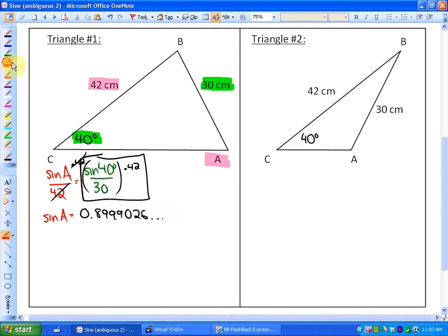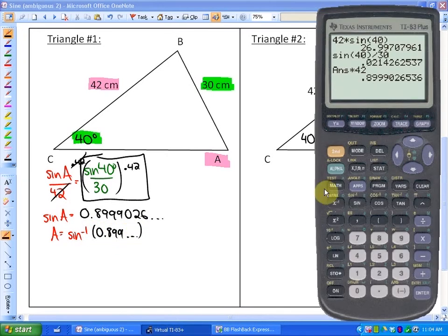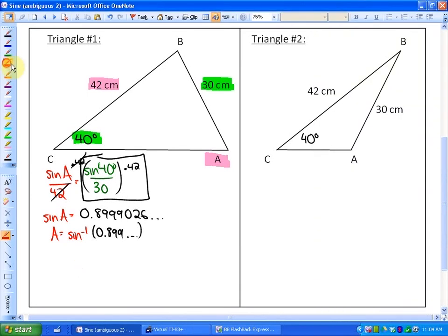Don't round that number. So angle A is going to be the sine inverse of that answer, of the 0.899. So if I take the sine inverse of that, so sine inverse of my previous answer, what I'm going to get is 64 degrees. So angle A is 64 degrees. So here's 64 degrees.